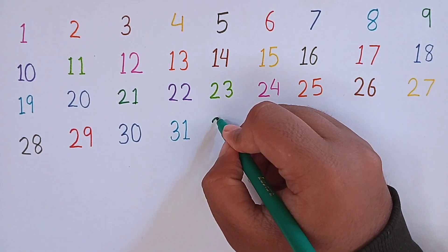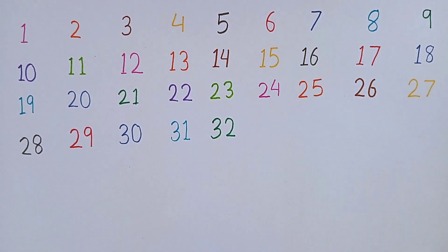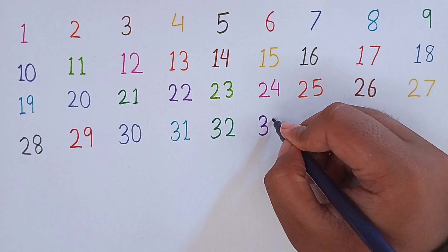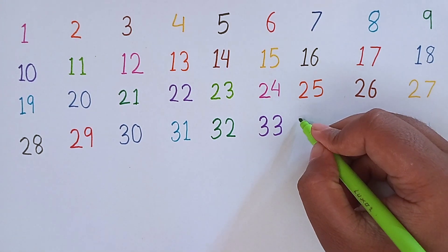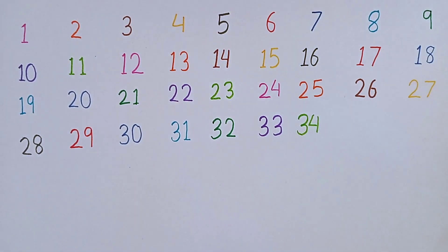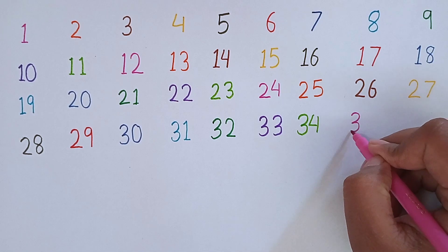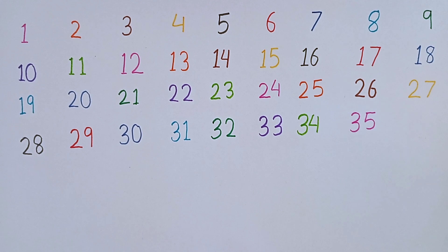Now I am writing 32. 3, 2 — 32. This is 32. After 32, I am going to write 33. 3, 3 — 33. This is 33. After 33, the next number will be 34. 3, 4 — 34. Next number: 3, 5 — 35. After 35, the next number will be 36.